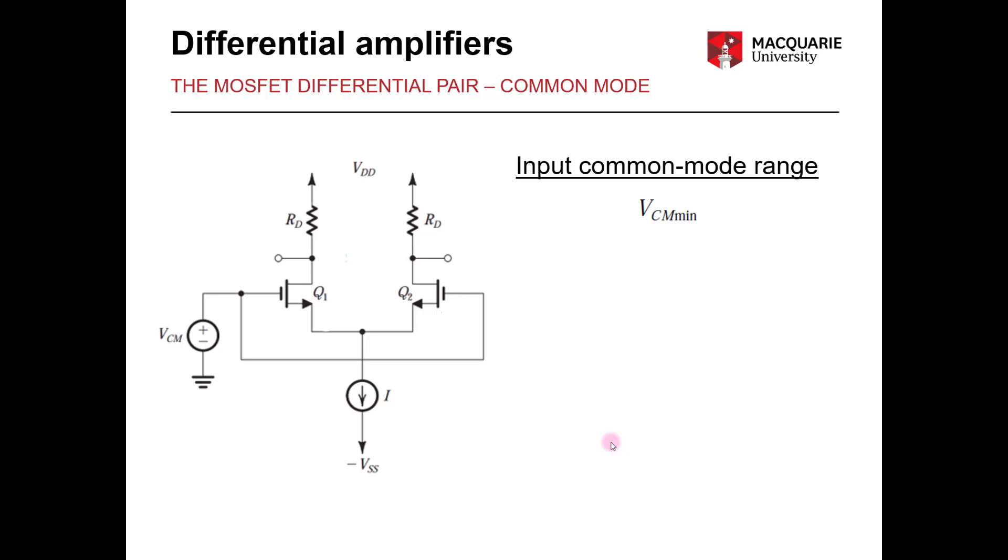So VCM min is limited by the fact that we need to maintain a certain voltage across our current source I in order for it to operate correctly. We will call that voltage VCS. This will depend on the details of the circuit. But we can tell straight away that our VCM min will in some way depend on VCS.